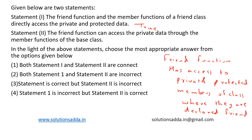Statement two: the friend function can access the private data through the member function of the base class. This statement is also true. A friend function is a non-class member function that is granted the right to access private and protected elements of a class. Although it's not a part of the class, the external function holds special permission to interact with the restricted parts of the class. So the friend function can access the private data through member functions of the class.